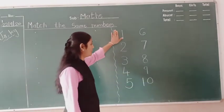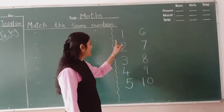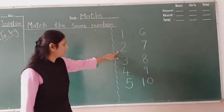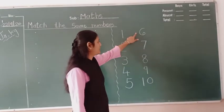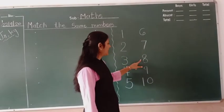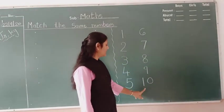So students first, the pronunciation of numbers 1 to 10: 1, 2, 3, 4, 5, 6, 7, 8, 9, 10.